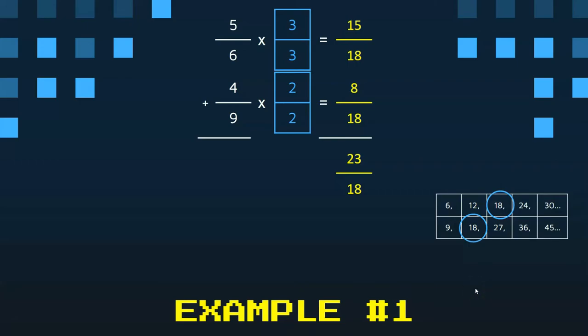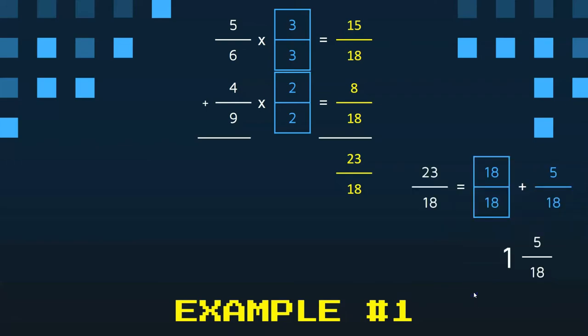15 plus eight is 23. 23 eighteenths is an improper fraction, so we need to convert that. And there we have done that. If you need help in converting an improper fraction, I have another video available that explains that. We can see the final answer of one and five eighteenths.